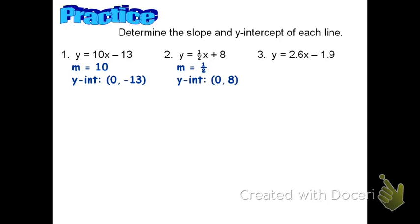Problem three looks a little tougher because of the decimals, but it's not. The slope is 2.6 and the y-intercept is zero comma negative 1.9.